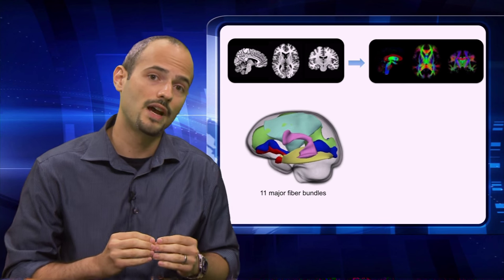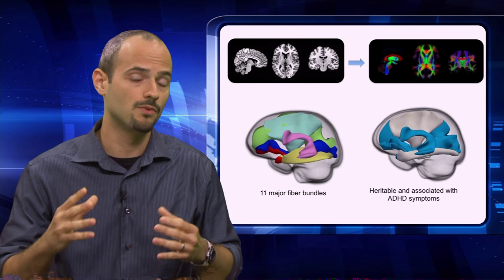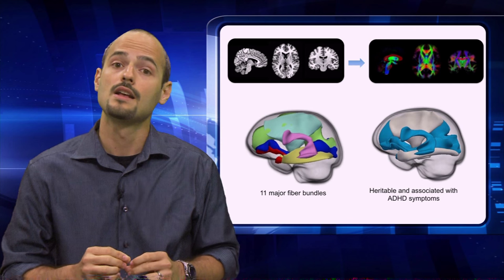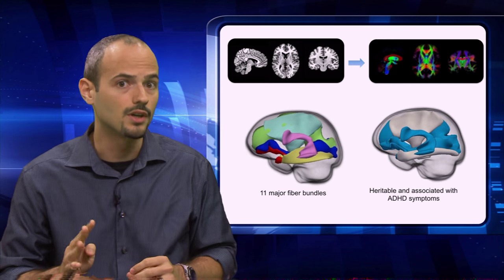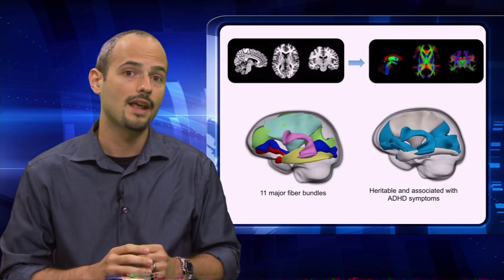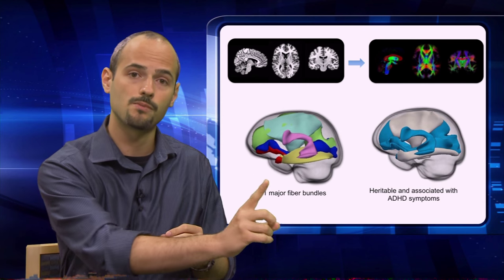Now, in our findings, out of the 22 possible variables, 10 are highly heritable in ADHD. Out of these 10, 4 are also associated with symptoms of ADHD. And I show these tracts in the rotating brain.